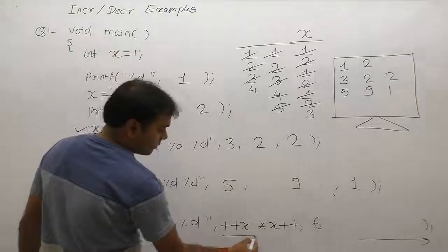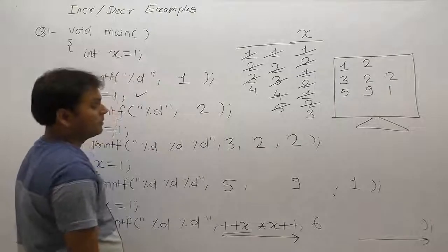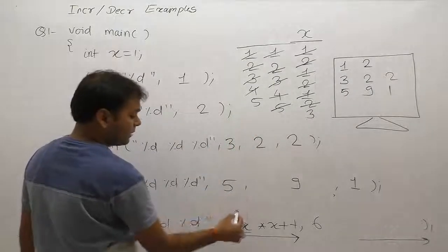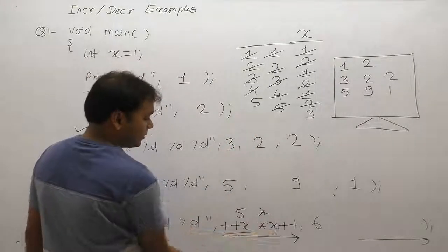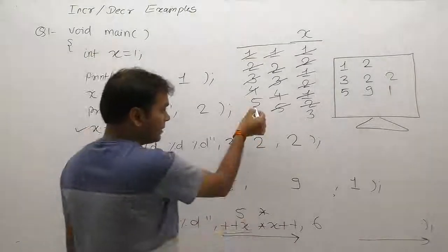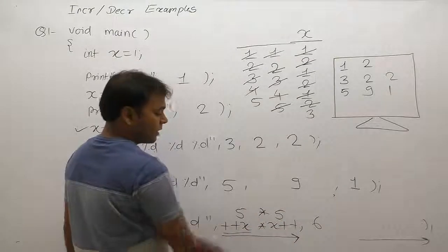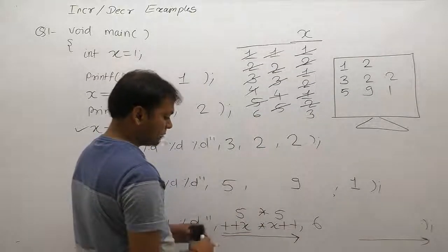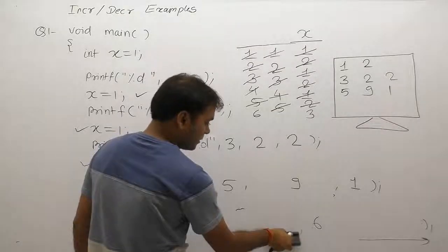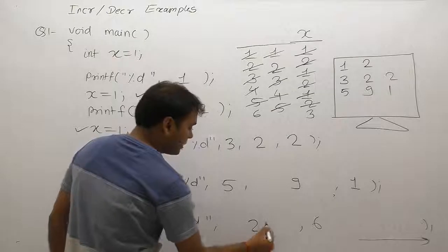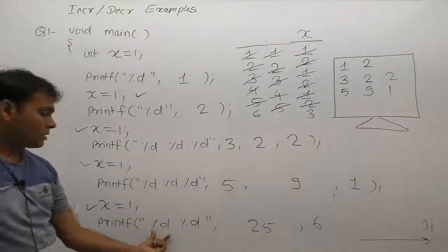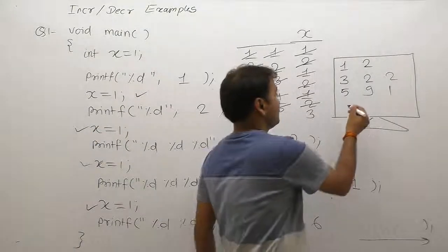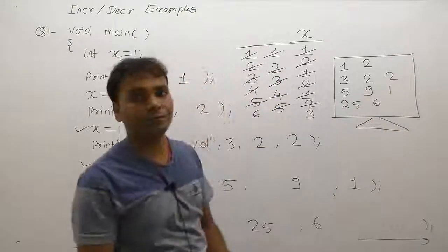The result of the second expression is 6. Now the first expression, solved from left to right: pre — first increment then replacement, replace current value which is 5. Then post: post means first replacement, current value is 5, replaced by 5, then x becomes 6. Result is 5 × 5 = 25. Final output: first percent d is replaced by 25, second percent d is replaced by 6. The output is 25, 6.